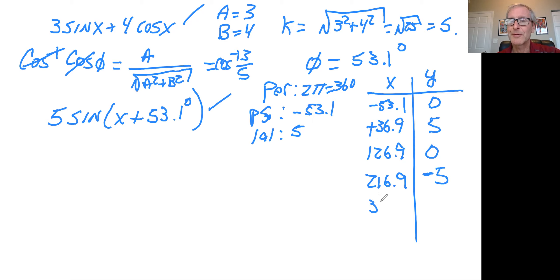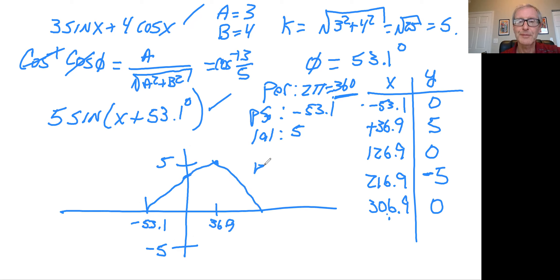The difference between these two needs to be the complete period, which is 360 degrees. So if you sketch this, say that's five and that's minus five. That's minus 53.1 degrees. You go all the way up to here, that would be 36.9. Come down to here, that would be 126.9. Go down to minus five, that point there would be 216.9. And when you get back up to where you started, that would be 306.9.